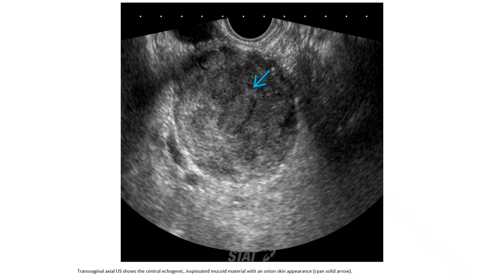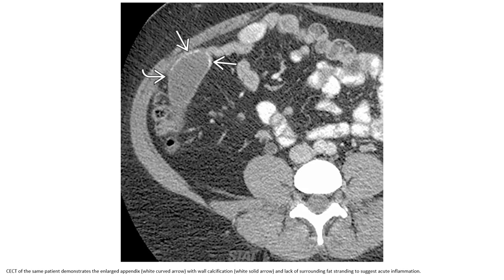This is the CT scan image showing the central lumen with specific mucinous content and an onion-skin appearance. This is the upper end of the appendiceal mucocele. Contrast-enhanced CT of the patient demonstrates the enlarged appendix with wall calcification and lack of surrounding fat stranding, which suggests no active inflammation.